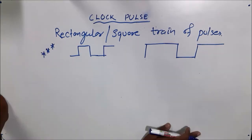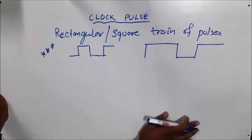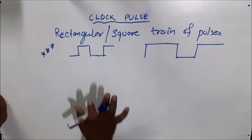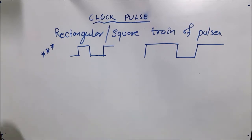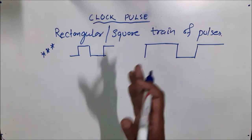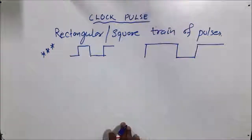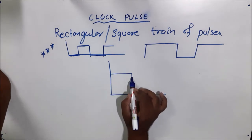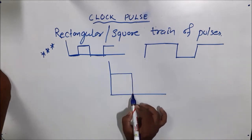In digital circuits, the pulse takes a vital role. In all digital circuits, to store, retain, or change any information with respect to the input, we must need an input pulse. By the application of pulses, the output state changes. If you take a graph, this may be a pulse structure.